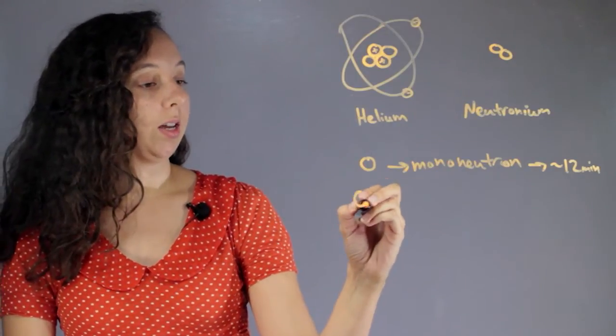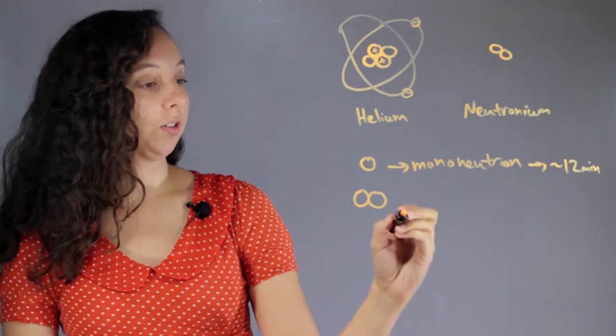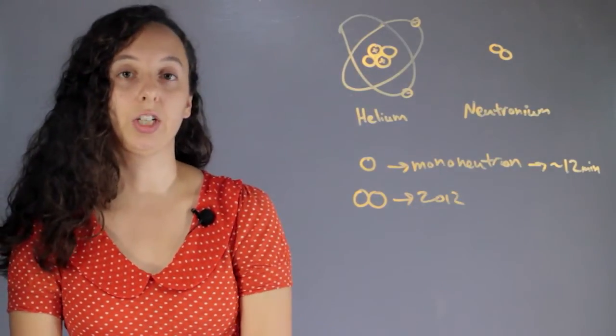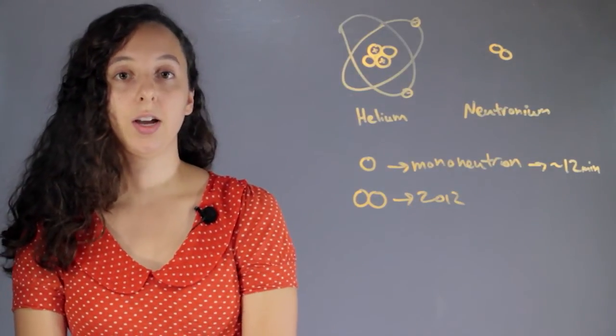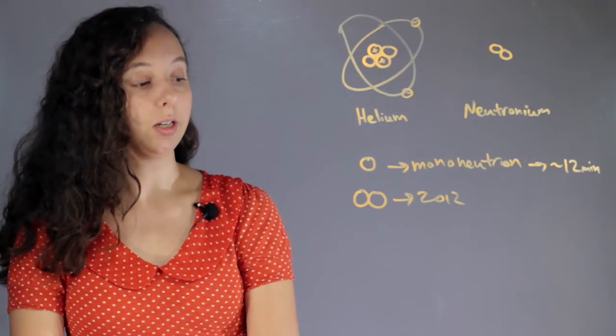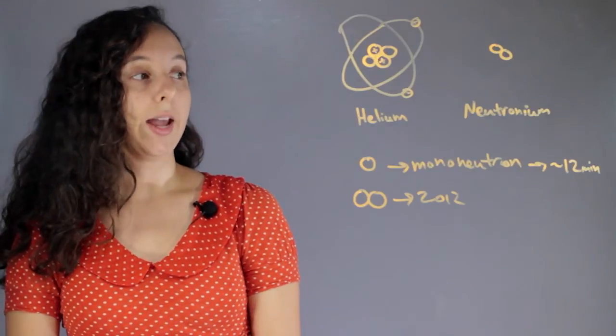Now, the next one is Dineutron, so two neutrons. This was only seen in 2012 for a tiny fraction of a second by some scientists, so very unstable. And again, its density would be pretty much the same. It's just two neutrons.